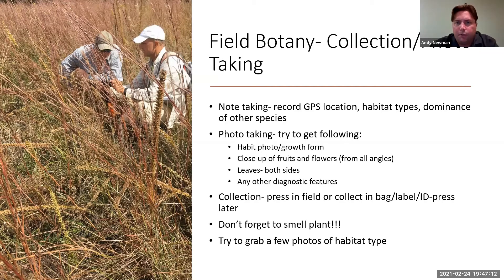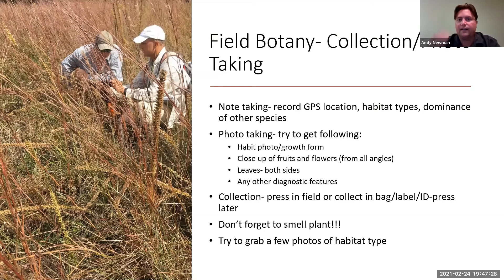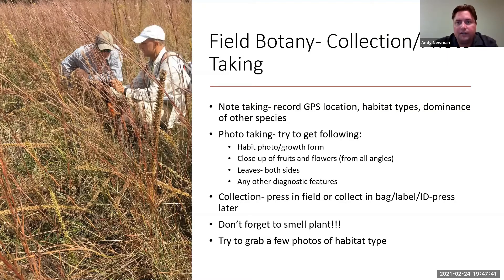This would be a whole different course on how to successfully identify plants in the field, but we'll go through it rapidly. Note taking is crucial, and having a good GPS to take your location is important. If you know the habitat type and the dominant species within an area, that's always great to note. For anybody just trying to identify plants from photos: get a photo of the overall plant's habit — is it big, tall, droopy, erect, sprawling? That context of how it grows is really important to capture.